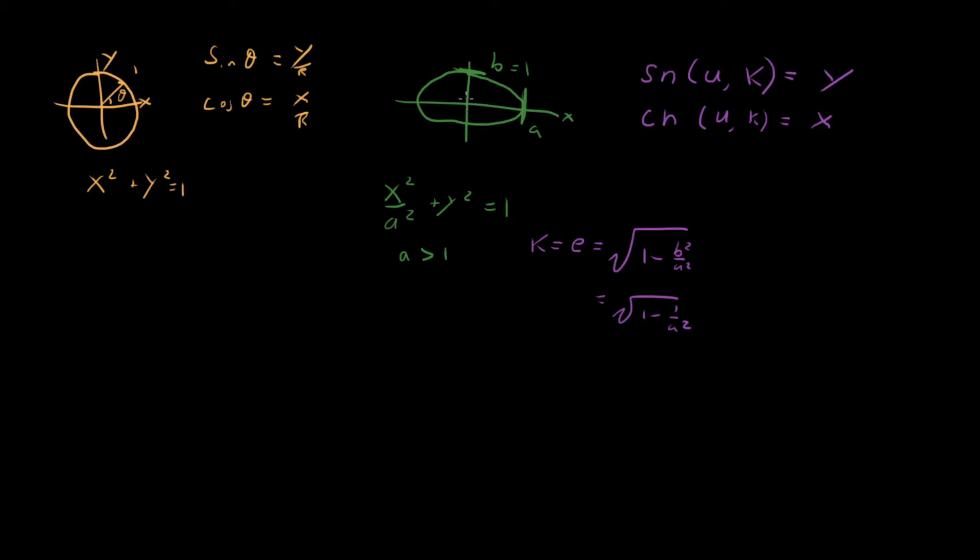And so in order to get that on the x-axis, where we're going from x equals 0 to a, we're going to define it as cn is equal to x over a. And so these are going to be our two trig functions that end up being analogs of cosine and sine from the circular case.